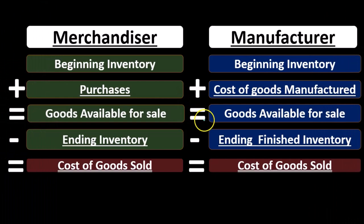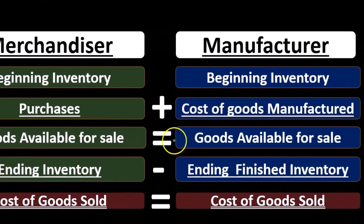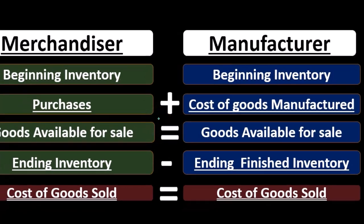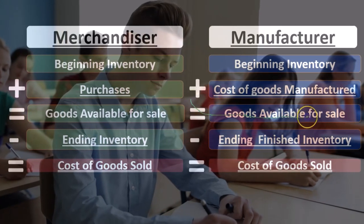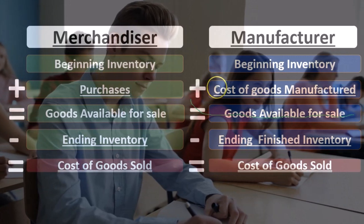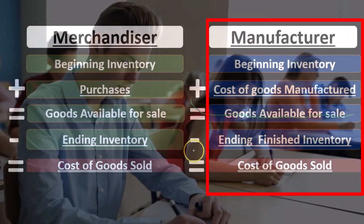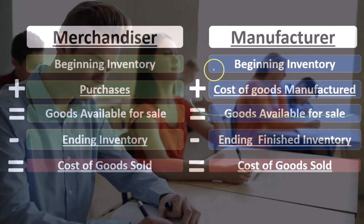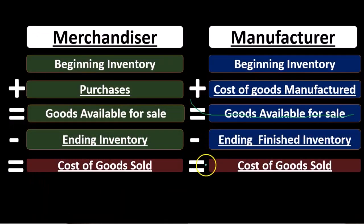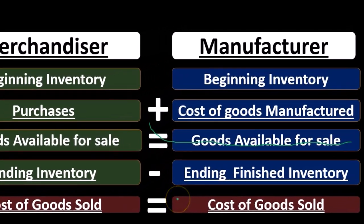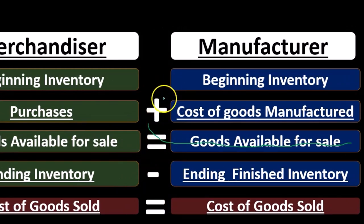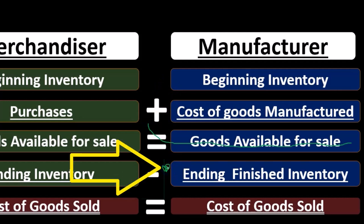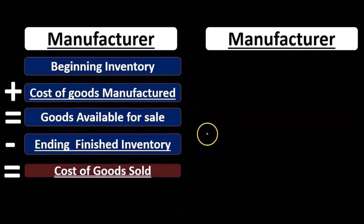Also note that cost of goods available for sale is a subtotal — a sub-category. You can simplify your algebra by eliminating it: beginning inventory plus cost of goods manufactured minus ending inventory gives you cost of goods available for sale. Any one of these components could be the unknown in a question. Just write down the formula, identify the unknown, and do what's needed algebraically to solve for it.